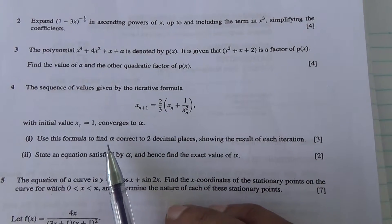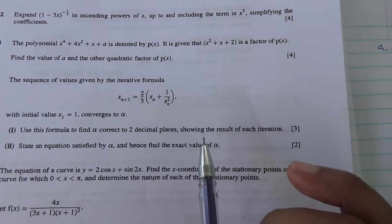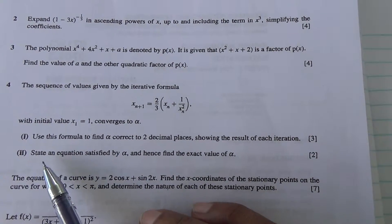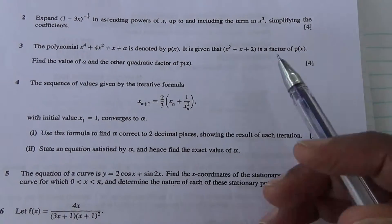Use this formula to find alpha correct to two decimal places, showing the result of each iteration. And also state an equation satisfied by alpha and hence find the exact value of alpha.